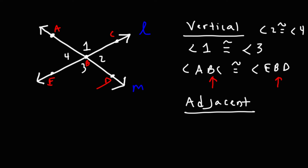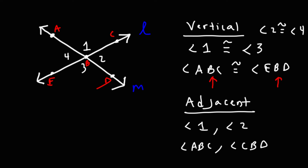Adjacent angles are angles that share the same vertex but they also share one ray or one side. So angles one and two are adjacent angles — they're adjacent to each other, right next to each other. That would be angle ABC and angle CBD. As you can see, they share a common vertex B.